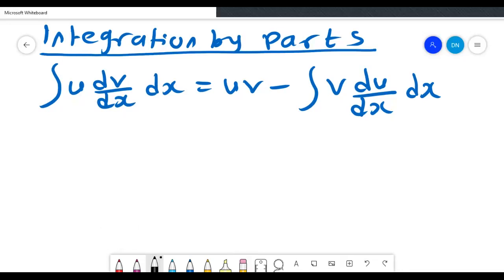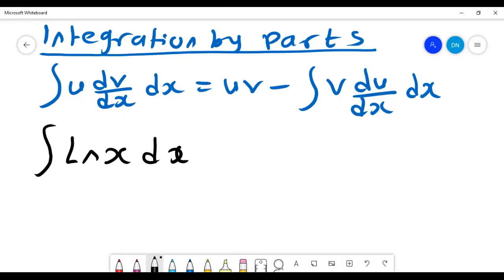We want to look at the integral of ln of x dx. To help us have a u and dv dx, we introduce a number which is one, because we know that if we multiply one times ln of x it's still ln of x. From there we can obtain our u.